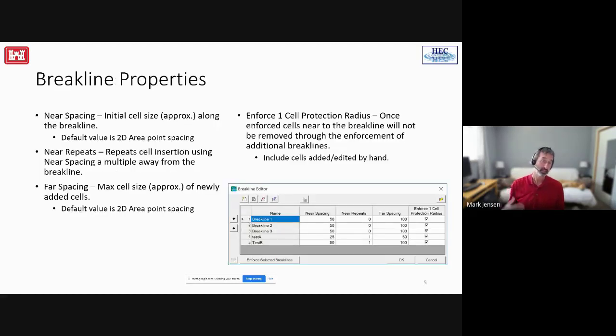So how do we go about doing that? Breaklines are just a polyline layer that is stored in the area of the tree of the 2D flow areas in the RASMapper window. Each polyline breakline has a unique name. If it really is a levee, then you might actually call it the name of the levee. That way it'll help you figure out what that breakline is for. And then it's got those columns in that data table. So it's near spacing, near repeats, far spacing, and enforce one cell protection radius.